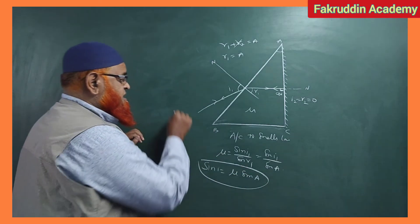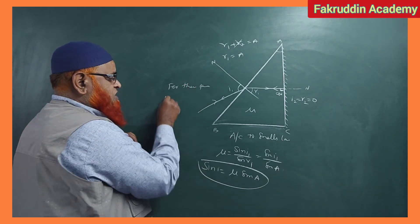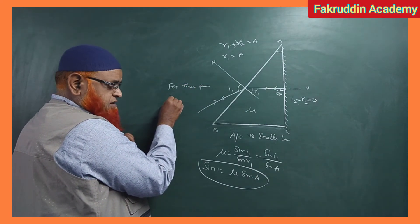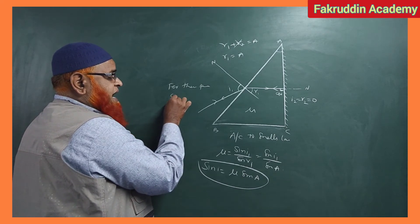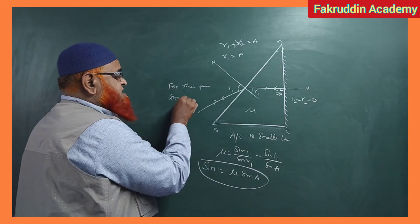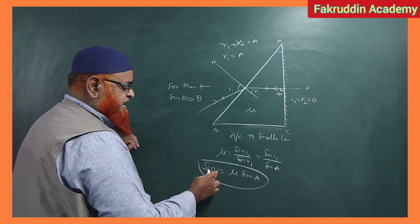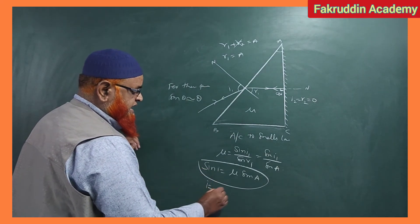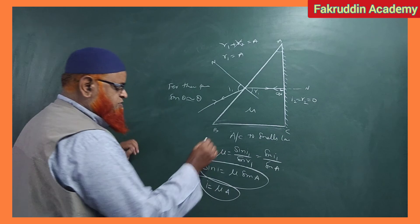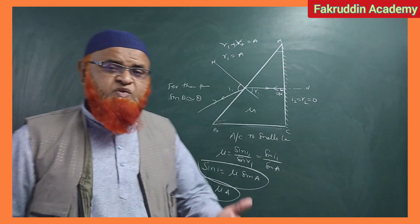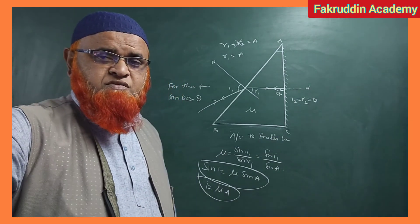For a thin prism, if the angles are very very small, we can write sin theta approximately equal to theta. So sin i becomes i and sin A becomes A, giving i equals mu times A. These types of problems are most frequently asked in previous year NEET. Thank you very much.